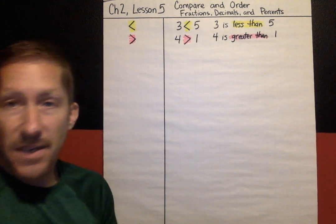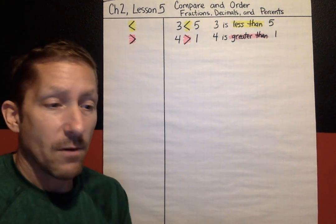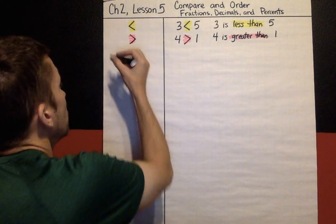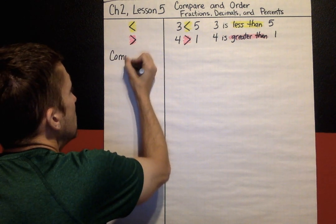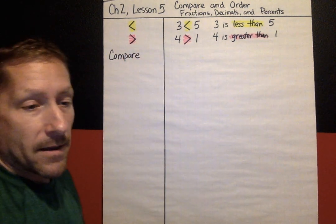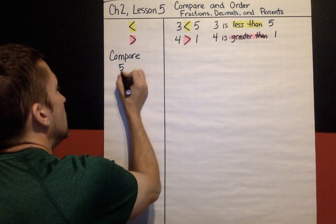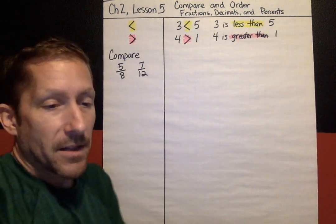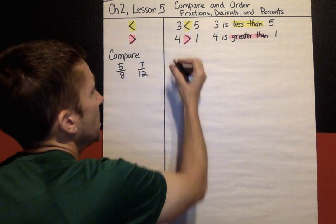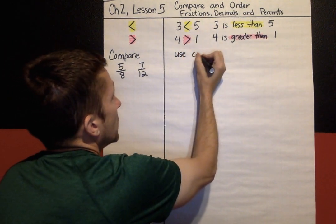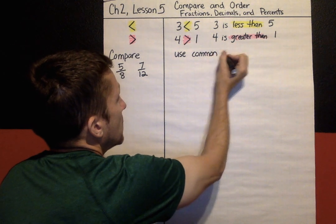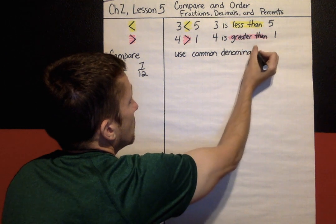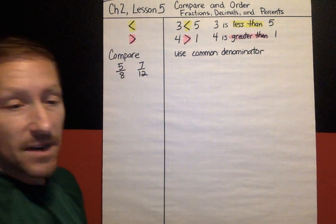We're going to use those symbols today when we're comparing and ordering fractions, decimals, and percents. First example: compare five-eighths and seven-twelfths. The first strategy we're going to talk about is the common denominator strategy.